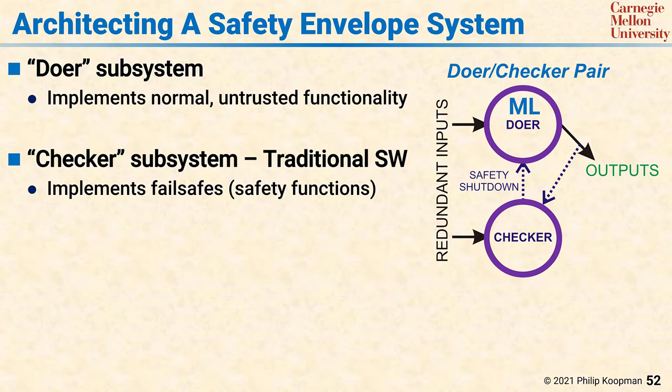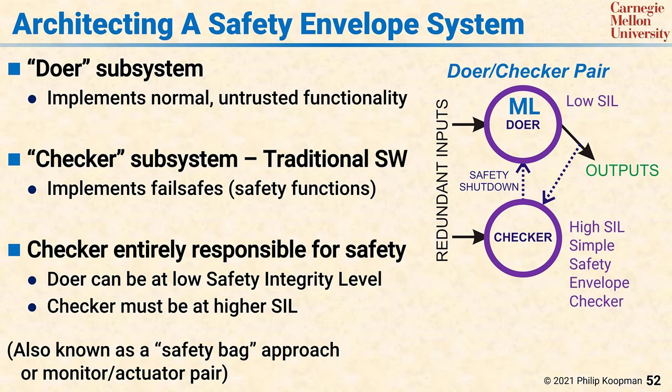The checker is traditional software not based on machine learning that can be designed to a suitably high SIL. It does not duplicate the function of the doer, but rather implements the safety envelope boundary and detects when the doer's behavior has left the safe state space to the unsafe state space, and can trigger a safety shutdown or other relevant safety action. In this pattern, the checker is entirely responsible for safety. The idea is that the doer does whatever it does and optimizes whatever it optimizes, so long as it does not cross the safety envelope boundary.